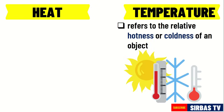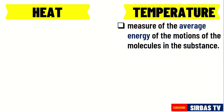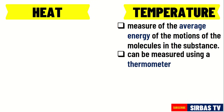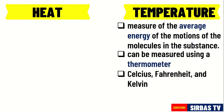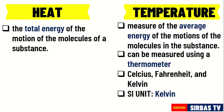Temperature refers to the relative hotness or coldness of an object. It refers to the measure of the average energy of the motions of the molecules in the substance. It can be measured using a thermometer. The three common scales used in measuring temperature are Celsius, Fahrenheit, and Kelvin. The SI unit for temperature is Kelvin. Meanwhile, heat is the total energy of the motion of the molecules of a substance, and the SI unit for heat is Joules.